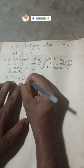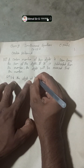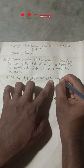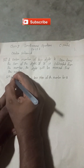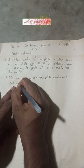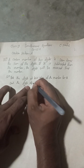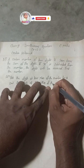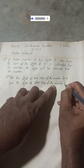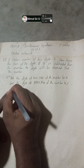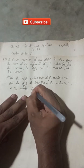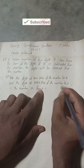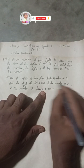Let the digit at the tens place of the number be x, and the digit at the ones place of the number be y. Therefore, the two-digit number so formed will be 10x + y, since x is at the tens place and y is at the ones place.